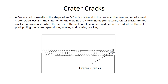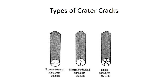A crater crack is usually in the shape of an X, found in the crater at the termination of a weld. Crater cracks occur when the welding arc is terminated prematurely. They are hot cracks caused when the center of the weld pool becomes solid before the outside of the weld pool, thus pulling the center apart during cooling. Here are examples of different crater cracks: on the far left a transverse crater crack, in the middle a longitudinal crater crack, and on the far right a star crater crack. They're all equally bad and require repair, but the additional naming helps when writing up a disposition or description.